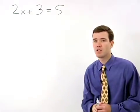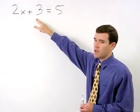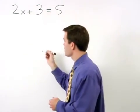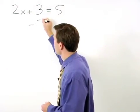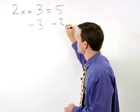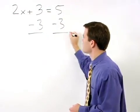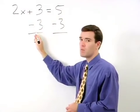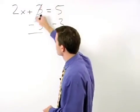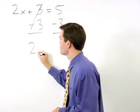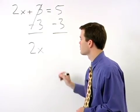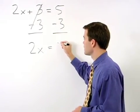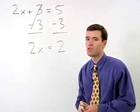To isolate 2x, we have to get rid of this plus 3 by subtracting 3 from both sides of the equation. On the left, plus 3 minus 3 cancels and we're left with 2x. On the right, 5 minus 3 simplifies to 2.